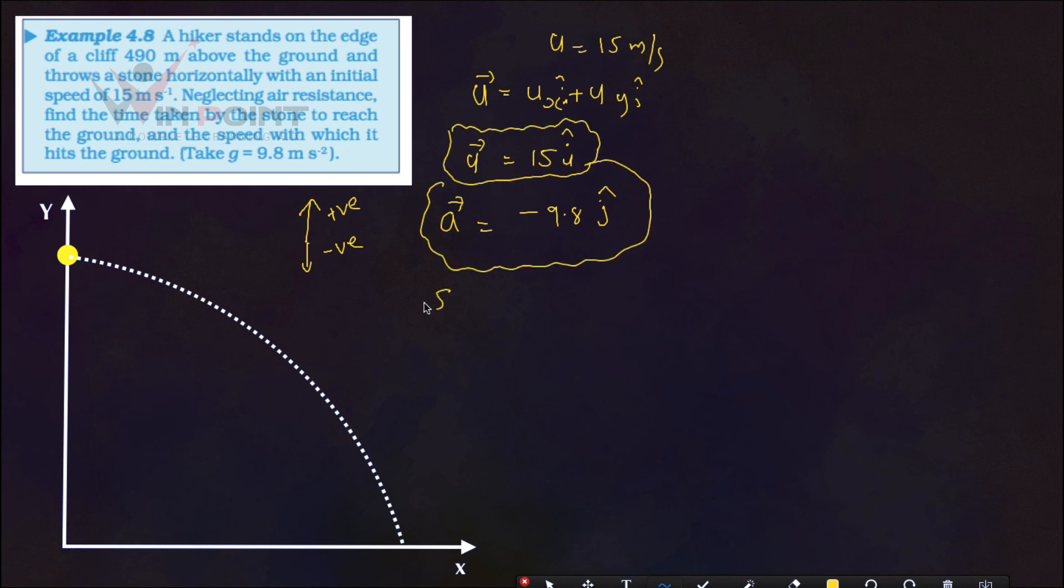We are going to find displacement, a relation for displacement. S equals UT plus half AT square using this relation. What is a standard form of displacement S? It is XI cap plus YJ cap. That is a standard form of displacement. Instead of U, I am going to use 15I cap into T plus, it will be minus because A is minus. Minus into half. Instead of A, I am writing 9.8 J cap into T square.